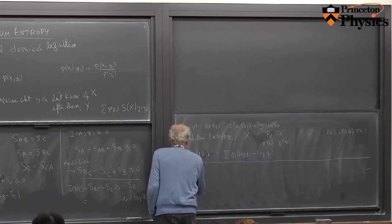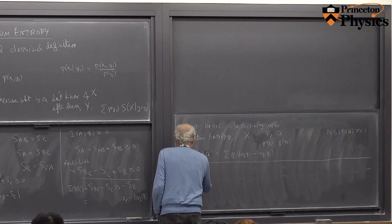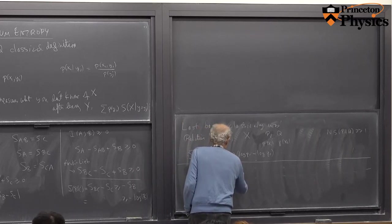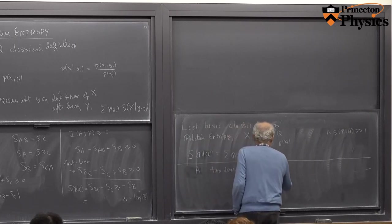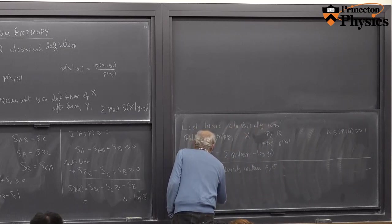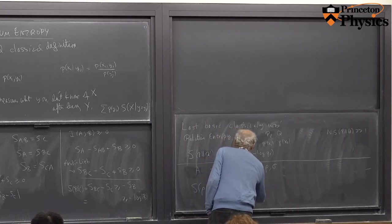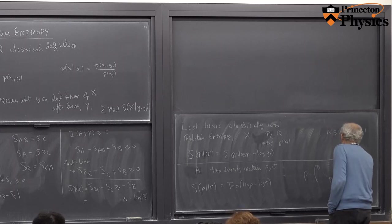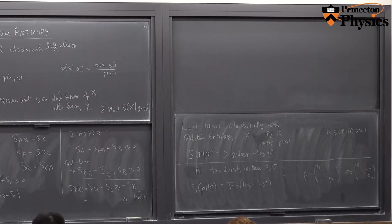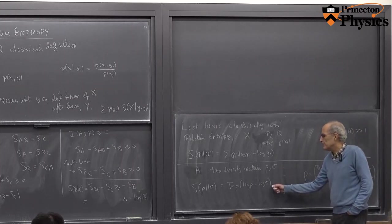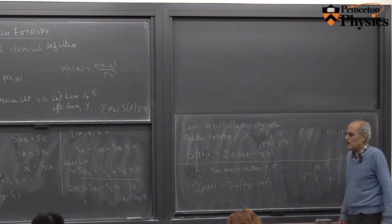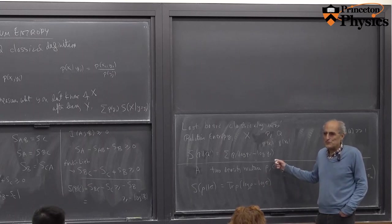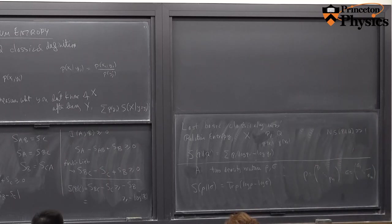Quantum mechanically, one simply imitates this definition. We have a single system A with two density matrices ρ and σ. Then we define the relative entropy between ρ and σ to be the trace of ρ times (log ρ minus log σ). If ρ and σ are diagonal matrices in the same basis, the quantum formula immediately reduces to the classical formula.